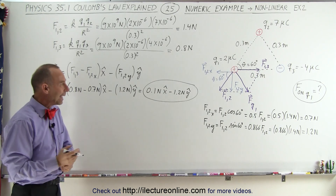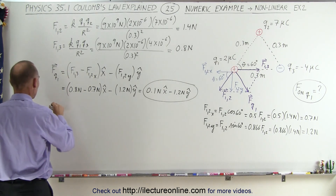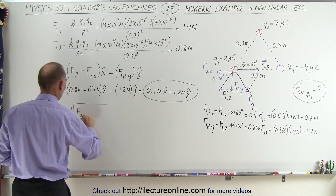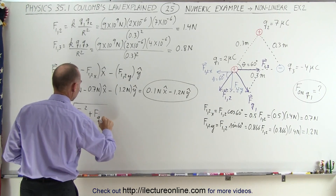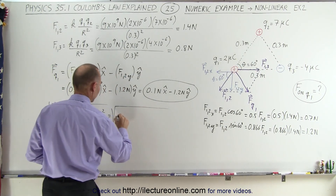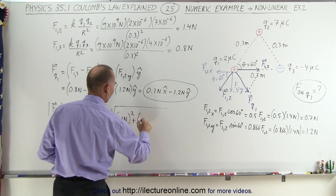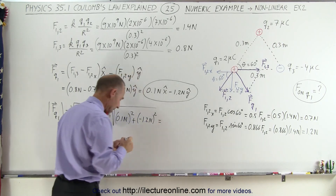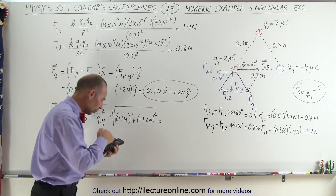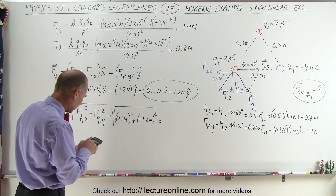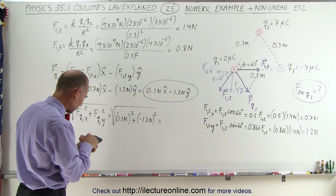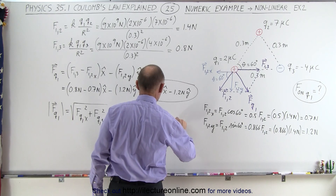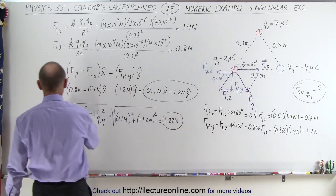But what if we want to find the magnitude and direction of this result? The magnitude of FQ1 equals the square root of FQ1 in the X direction squared plus FQ1 in the Y direction squared, which is the square root of 0.1 Newton squared plus 1.2 Newtons squared. Keeping the more precise value of 1.2124 in the calculator to avoid rounding errors, squaring that plus 0.1 squared and taking the square root gives us 1.22 Newtons. So 1.22 Newtons is the magnitude of the resultant force.